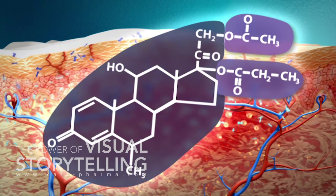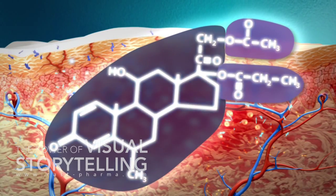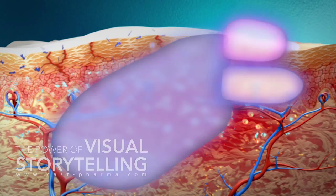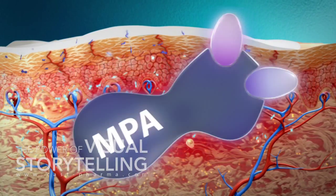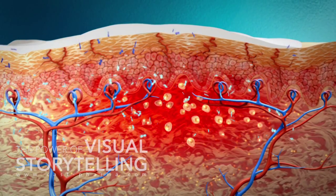MPA is not halogenated. This enables it to permeate the upper corneous layer rapidly.